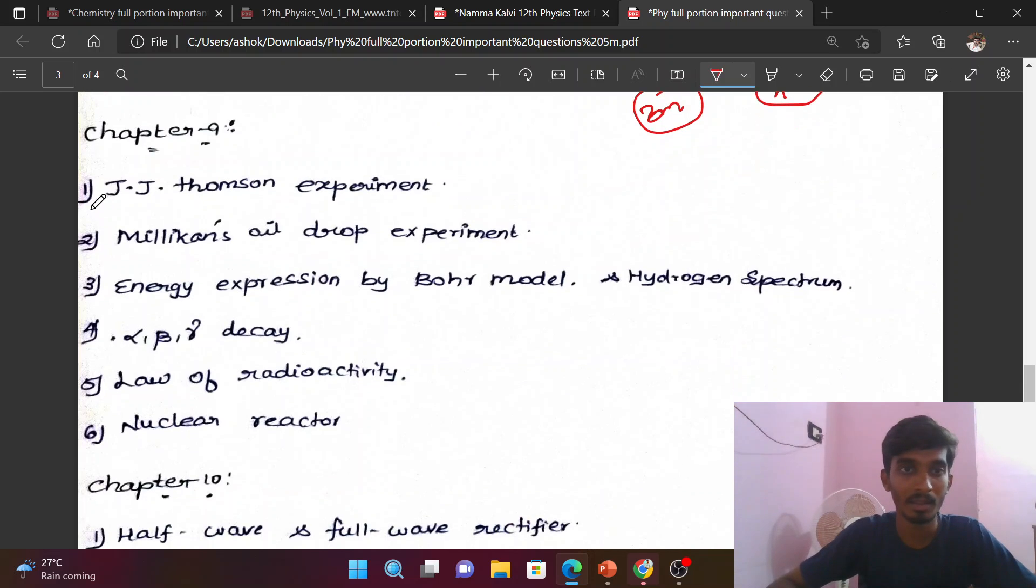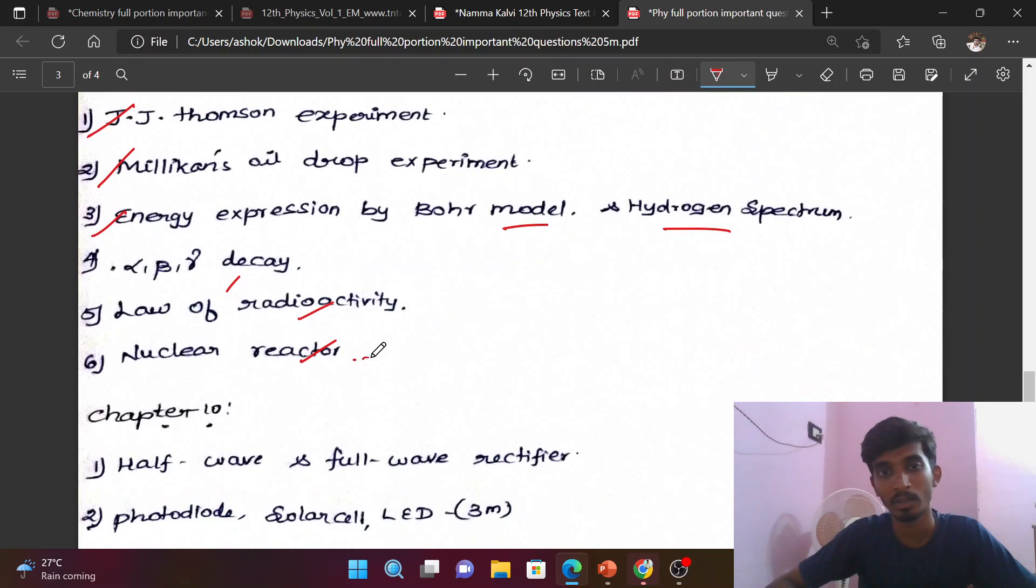Chapter 9: JJ Thompson experiment, Millikan's oil drop experiment, energy expression by Bohr model and hydrogen spectrum, alpha beta gamma decay, law of radioactivity, and nuclear reactor with block diagram.